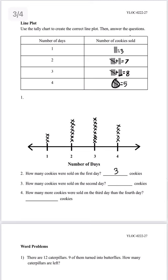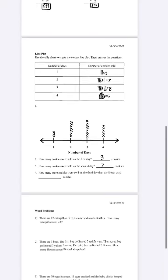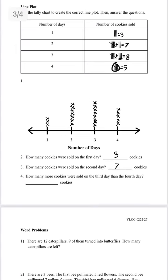That was the answer for number two. Let's look at number three: how many cookies were sold on the second day? On the second day it shows that seven cookies were sold, so seven is the answer for number three.